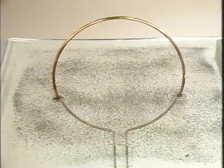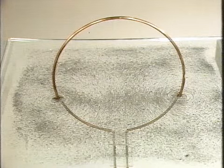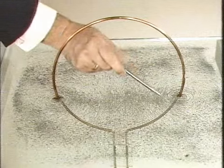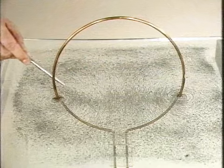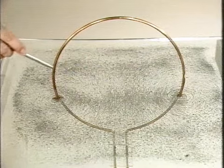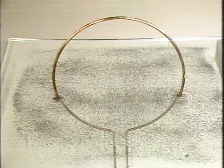Ja, wir sehen nun recht deutlich diesen ringförmigen erwarteten Feldlinienverlauf, vor allen Dingen hier in der Gegend, an der der stromführende Draht durch diese durchsichtige Platte durchstößt. Da erkennen wir sehr deutlich den ringförmigen Feldlinienverlauf.